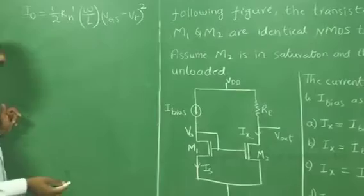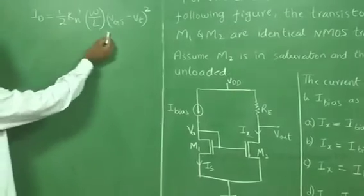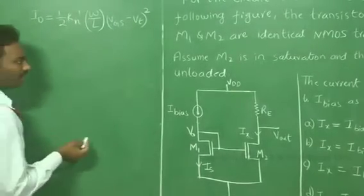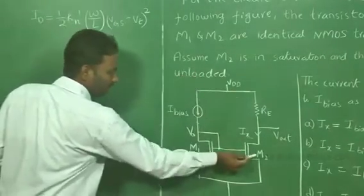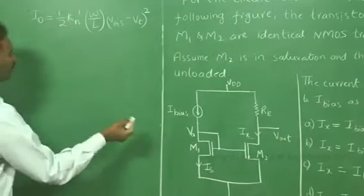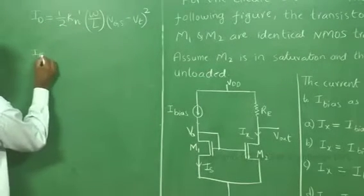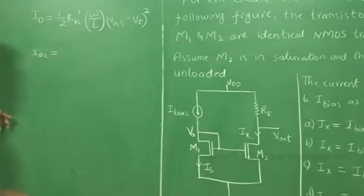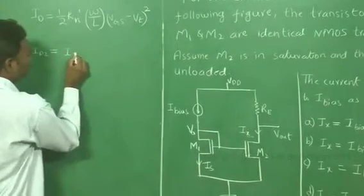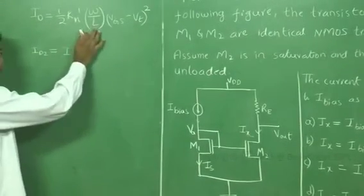For an NMOS transistor in saturation, the drain current ID is given by this formula. It is given to assume transistor M2 is in saturation. So I can write ID2, because here we have Ix, and ID2 can be expressed in this way.